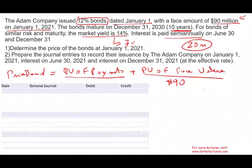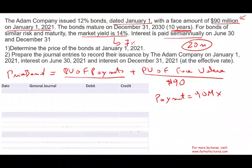Now the payments — you have to know how to compute the payments. The payment equals the face value of the bond, 90 million, times the stated rate. You have to be careful because notice you have 12% and 14%. Your payment is based on what you issued the bond for — you issued the bond to pay 12%, which is the contract rate. However, this bond pays semi-annually, so you multiply by half. Be careful if it's semi-annually to multiply by half. So the payment is 5.4 million every six months.